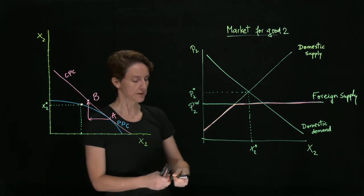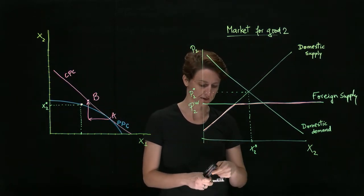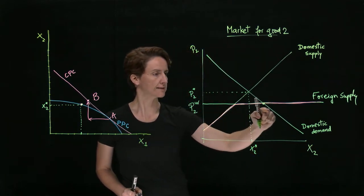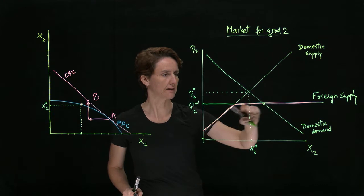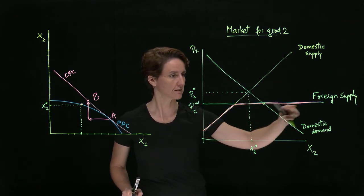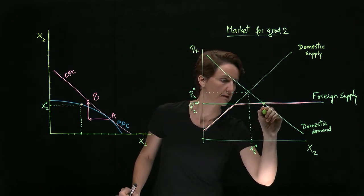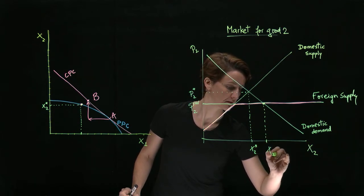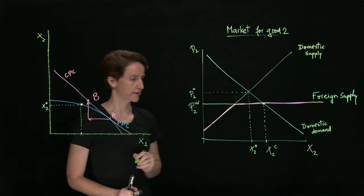And so, what that means is domestic consumers will choose to consume at the intersection of demand and the supply they face. Next to consumption.